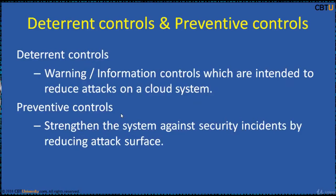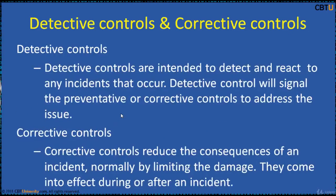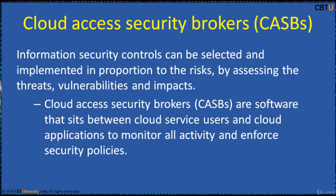Deterrent controls are warning information controls intended to reduce attacks on a cloud system. Preventive controls strengthen the system against security incidents by reducing attack surface. Detective controls are intended to detect and react to any incidents that occur. In the event of an attack, a detective control will signal preventive or corrective controls to address the issue. Corrective controls reduce the consequences of an incident, normally by limiting the damage — they come into effect during or after an incident. Information security controls can be selected and implemented in proportion to the risks by assessing the threats, vulnerabilities and impacts.